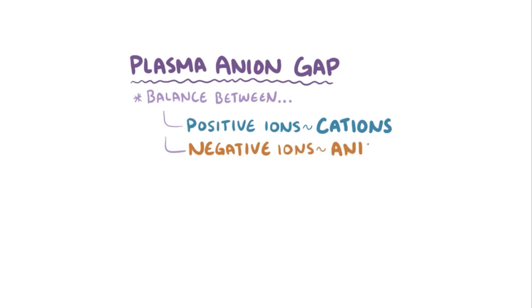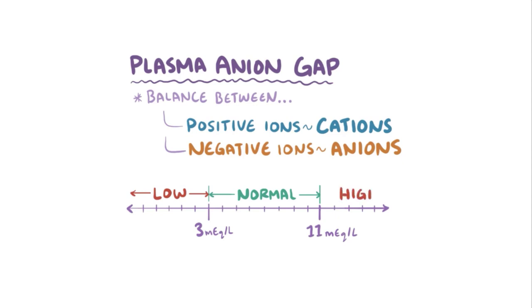Plasma anion gap is a measurement of the balance between positively charged ions, called cations, and negatively charged ions, called anions, within the plasma. Its normal range is typically between 3 and 11 milliequivalents per liter, while anything below 3 milliequivalents per liter is considered abnormally low and above 11 milliequivalents per liter is usually considered abnormally high.